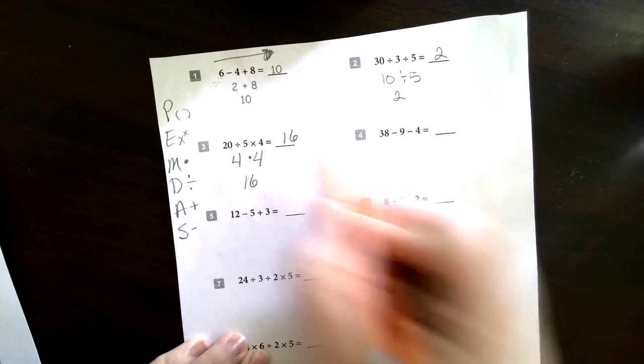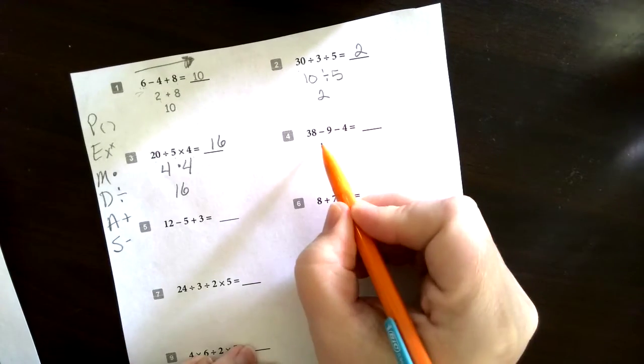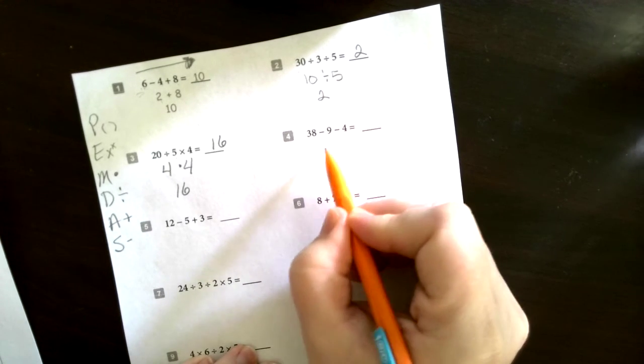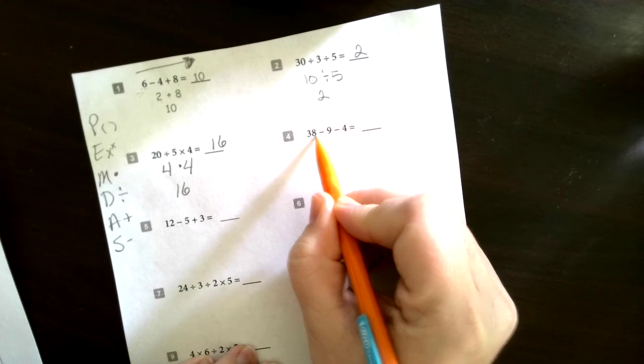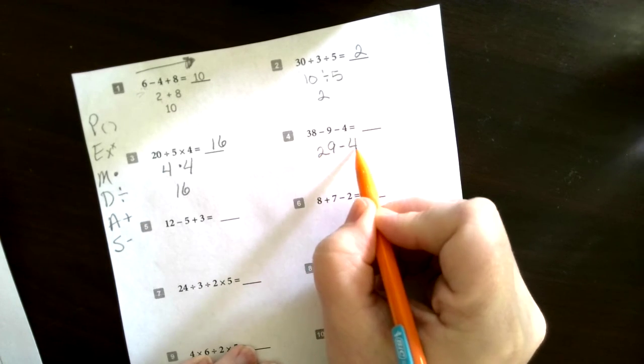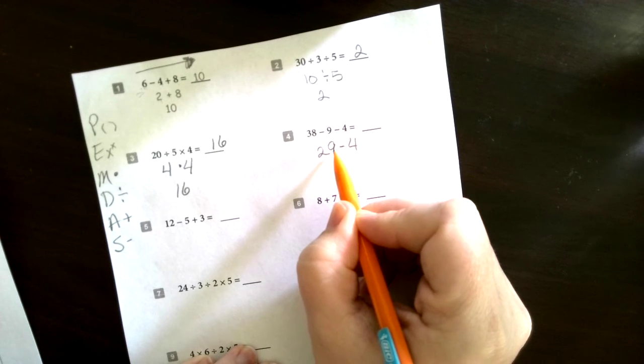This one, 39 subtract 9 and subtract 4. When you subtract 9 from 39, you get 29 minus 4, carry down the 4 there, and then you subtract it again. So 29 minus 4 again is 25, so our answer is 25.